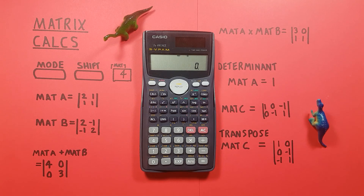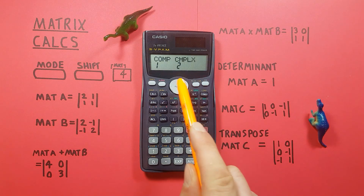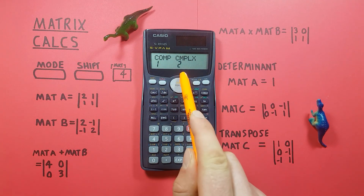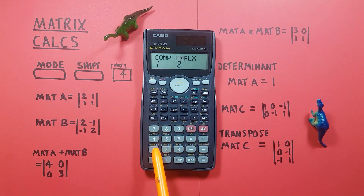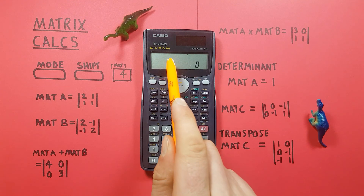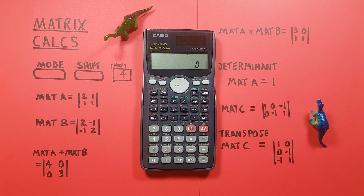When we're done and want to exit matrix mode to do normal calculations, press the mode key once to get to the mode screen, then press 1 for comp mode. You'll see the MAT indicator disappear from the top of the screen and we're back into normal mode, ready for regular calculations. I hope this helps, and good luck on those tests everybody!